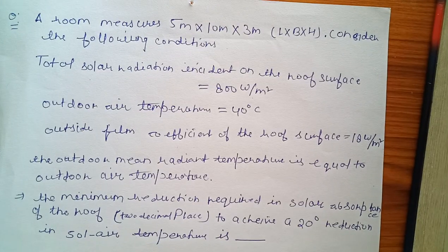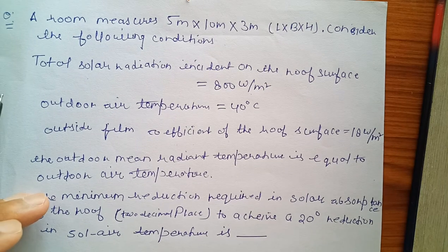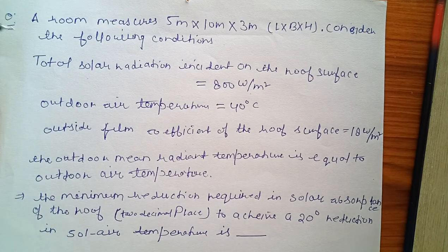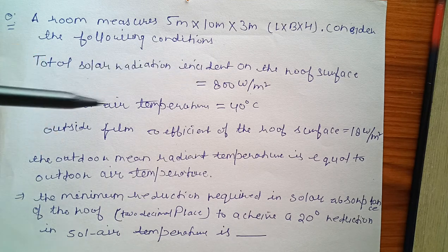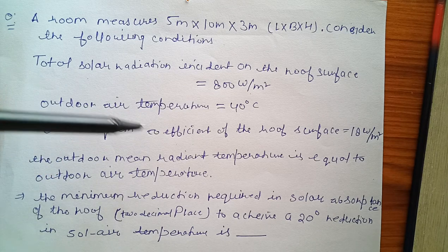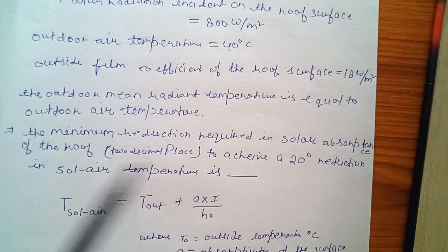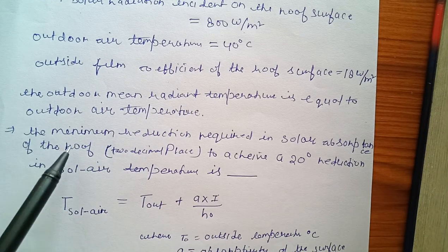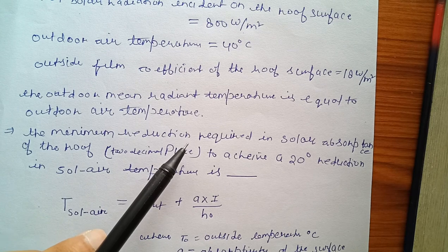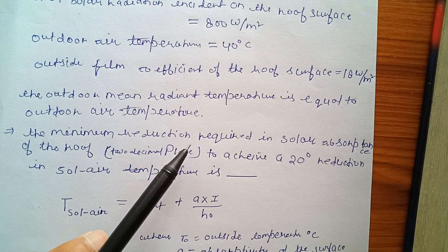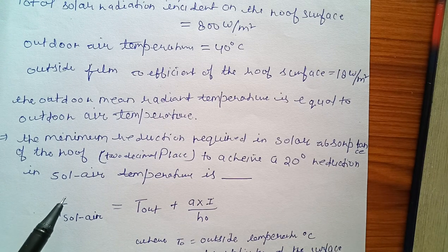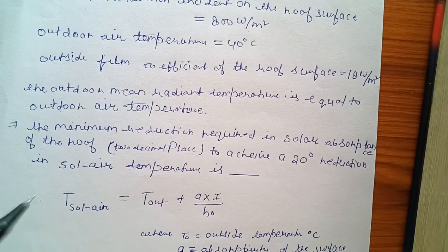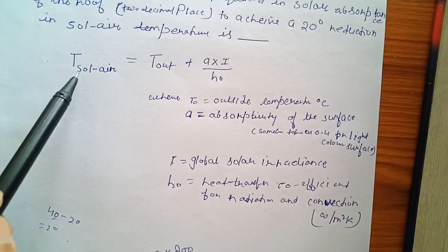Next question: a room measures 5 meters by 10 meters by 3 meters. The given values are solar radiation incident on the roof surface, outdoor air temperature, outside film coefficient is given, and the outdoor mean radiant temperature equals outdoor air temperature. The minimum reduction required in solar absorptance of the roof to achieve a 20-degree reduction in solar air temperature.